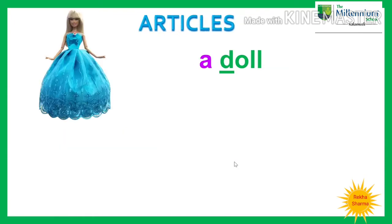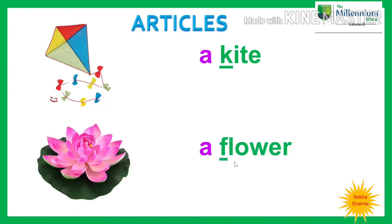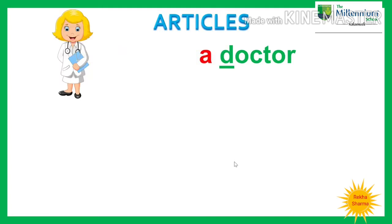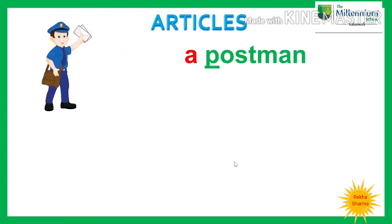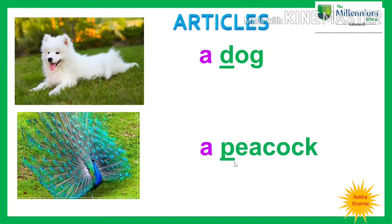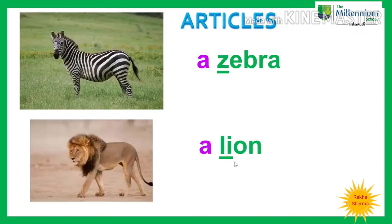A doll, a cup, a kite, a flower, a banana, a doctor, a woman, a postman, a teacher, a dog, a peacock, a zebra, a lion. In all these examples, the words begin with consonants. That's why we use the article A before them.